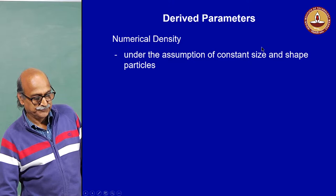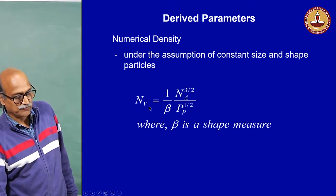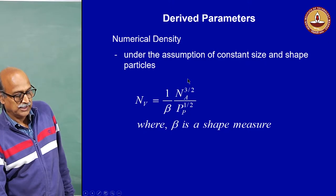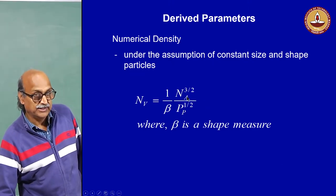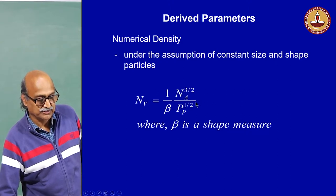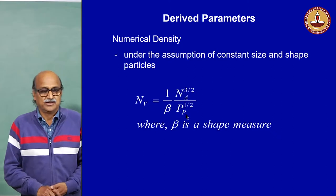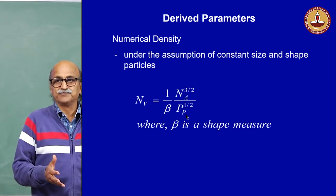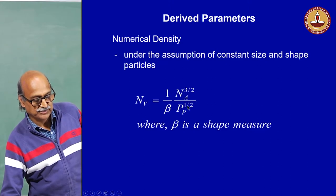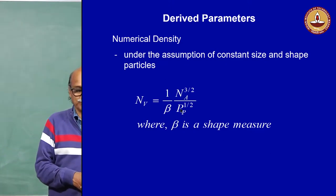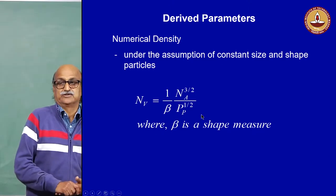The first derived parameter for numerical density will be under the assumption of constant size and shape of the particles. If we are able to assume the shape, then we can estimate the number of particles per unit volume from a measure of number of particles per unit area. Under this assumption, Nv equals 1 upon beta, times Na to the power 3/2 divided by Pp to the power 1/2, where Na is the number of particles per unit area and Pp is the point fraction.